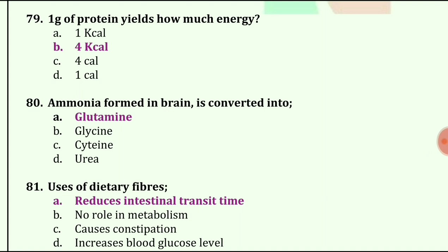Ammonia formed in the brain is converted into glutamine. Uses of dietary fibers: reduces intestinal transit time.